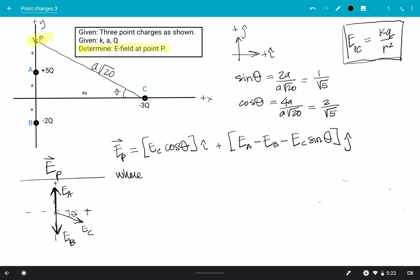So I'll say where E sub A, now I'm just going to use the equation for electric field of a point charge, right? So that'll be K times the magnitude of charge A, which is 5Q, drop the sign here. This is magnitude only divided by R squared. R is the distance between our point charge and our point of interest. So for particle A, that distance is just lowercase a there. So that's A squared.